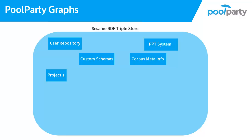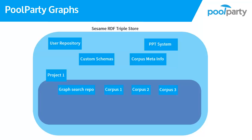In addition to repositories, you also have named Graphs. A project repository has its data stored in named Graphs — you can imagine them as tables in a database. The most important graphs we would like to mention: the Thesaurus data graph contains concepts and all their information.